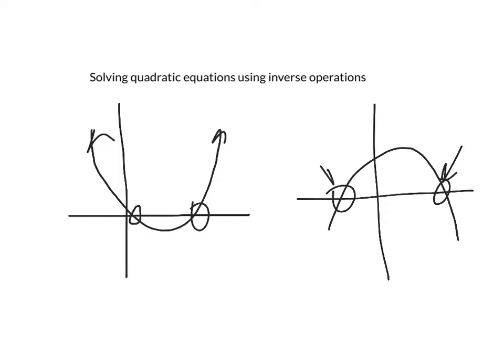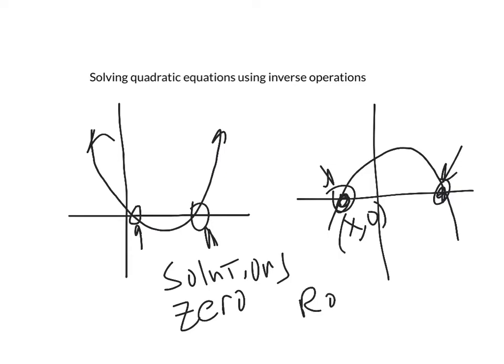So when we're solving these, we're trying to find when they pass through the x-axis. The places they cross we can call solutions, zeros (because y equals zero), or roots. These are the three names for these solutions.